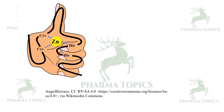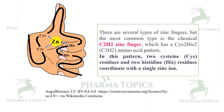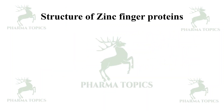There are several types of zinc fingers, but the most common type is the classical C2H2 zinc finger, which has two cysteine residues and two histidine residues. In the middle, it attaches with zinc — that is why it is called a zinc finger. In this pattern, two cysteine residues and two histidine residues coordinate with a single zinc ion.